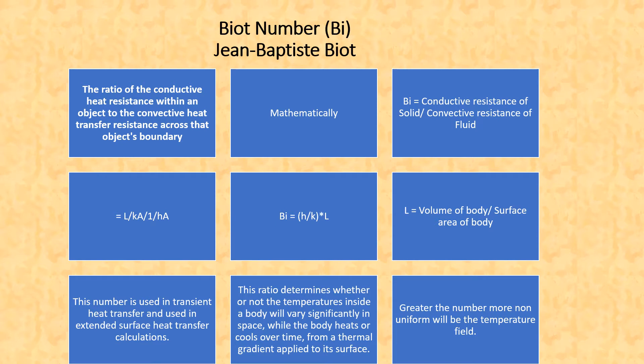Biot number is used in transient heat transfer and in extended surface heat transfer calculations. It is also used to determine whether or not the temperature inside a body will vary or change significantly in space when the body heats or cools over time from a thermal gradient applied to its surface.